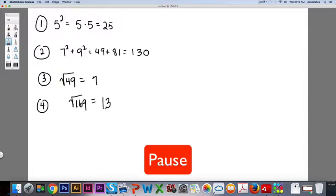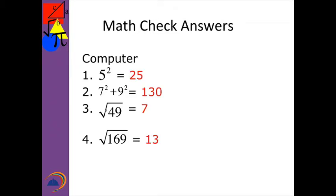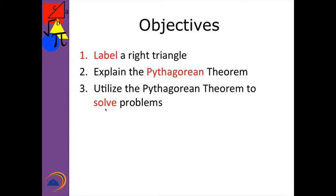Pause the video, teachers, if the kids need more time. Welcome back. Let's go back to our PowerPoint and look at our objectives for today. Fill in on your note taker the things that are in red. Number one, we're going to learn how to label a right triangle with some math vocabulary. Number two, we're going to explain what the Pythagorean theorem is all about. And three, to utilize the Pythagorean theorem to solve some problems.